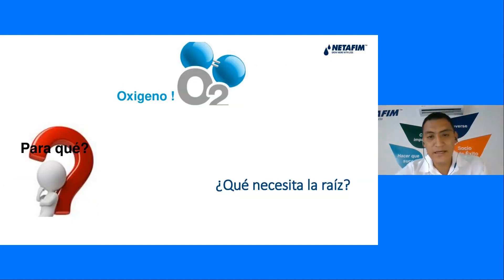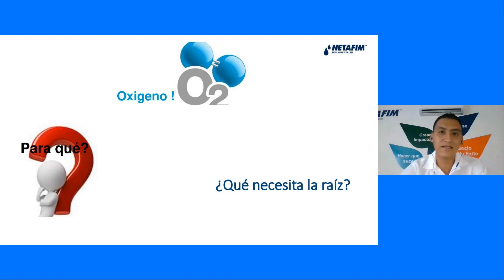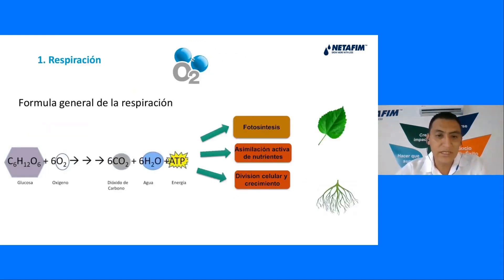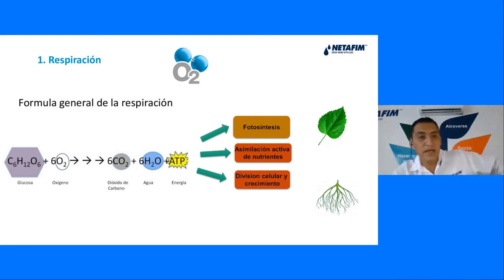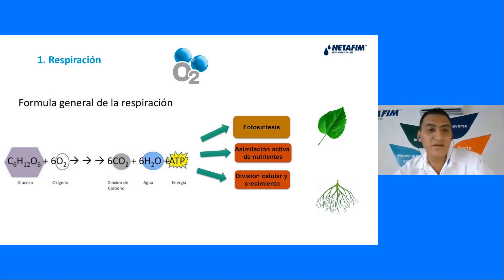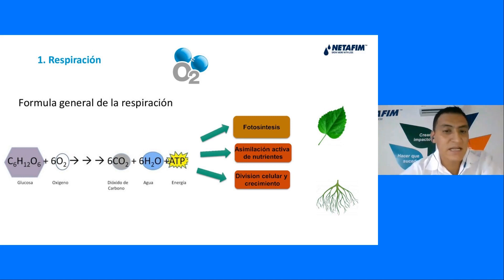¿Qué necesita la raíz? Pues oxígeno. ¿Y para qué lo necesita? Como primer punto: la respiración. La fórmula general de la respiración es glucosa más oxígeno, que se transforma en dióxido de carbono más agua, y nos da ATP, que se destina a la fotosíntesis, a la asimilación activa de nutrientes y a la división celular y el crecimiento.